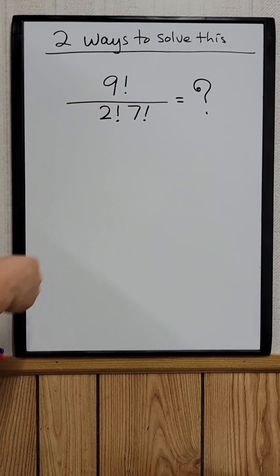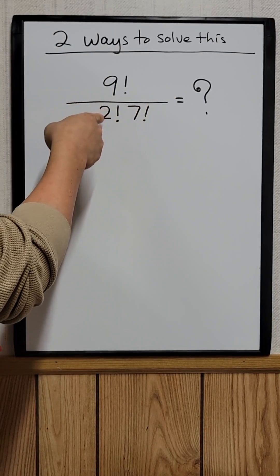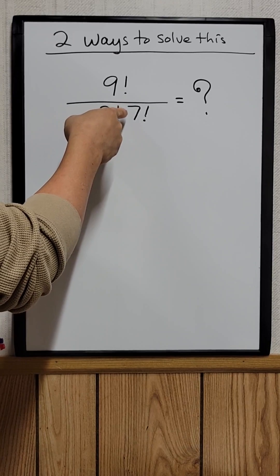There's two ways to solve this right here. Nine factorial divided by two factorial times seven factorial.